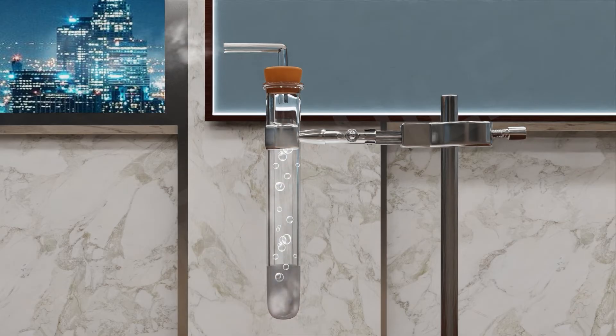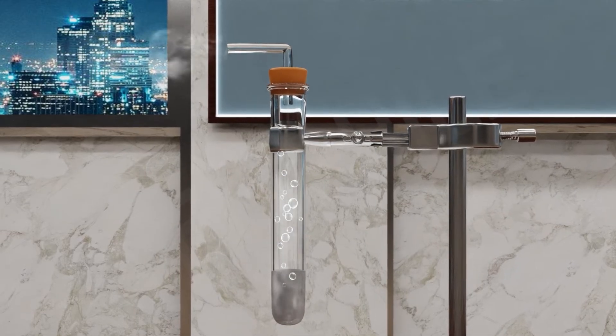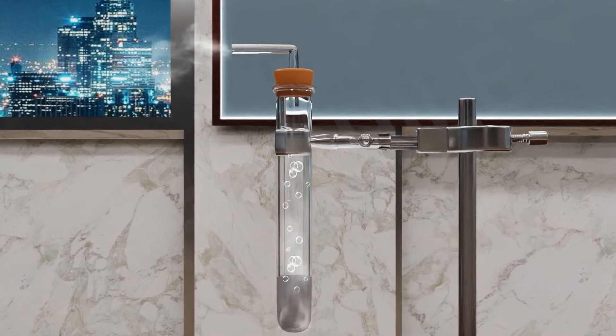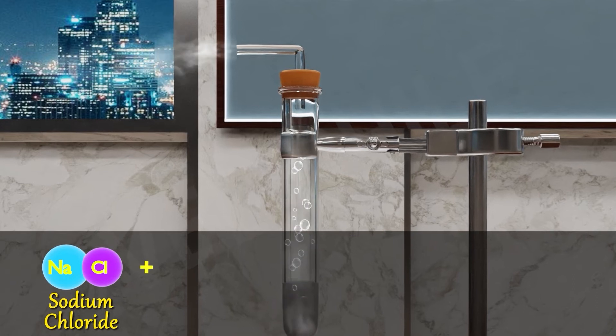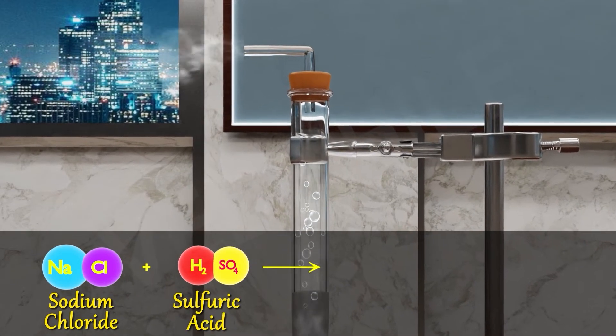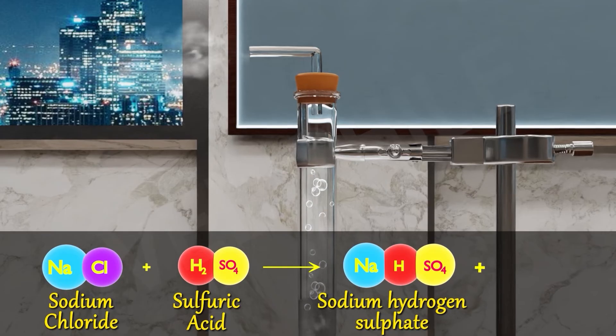Let's find out with a chemical equation. NaCl plus H2SO4 produces NaHSO4 plus HCl.